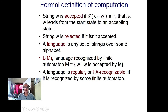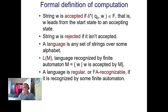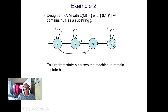A string is accepted if the machine ends in a final state. Strings that do not end in a final state are rejected and are not in the language of that finite state machine. A language is any set of strings over some alphabet, and the beauty is that any language accepted by a finite state machine can be expressed as a regular expression. A language is regular, or finite-automata recognizable, if it is accepted by some finite automaton.